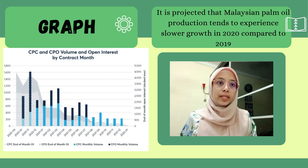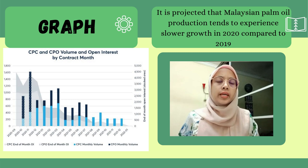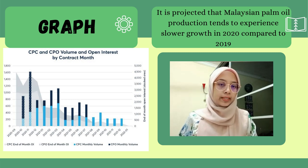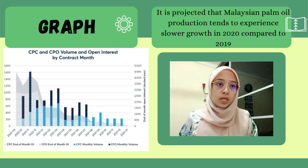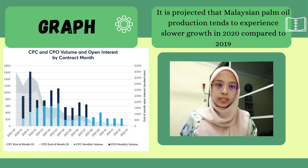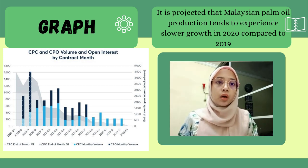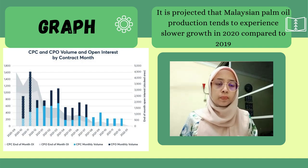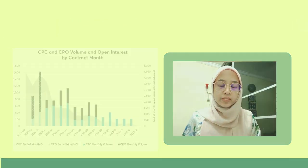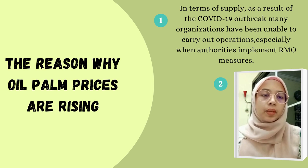Based on the graph, Malaysia's palm oil production is projected to experience slower growth in 2020 compared to 2019. Malaysia's palm oil stocks will reach 1.9 million tons by the end of 2020, compared to 2 million tons in 2019. Palm oil stocks are an important variable influencing crude palm oil price movements — low stock will result in higher crude palm oil prices, and vice versa.